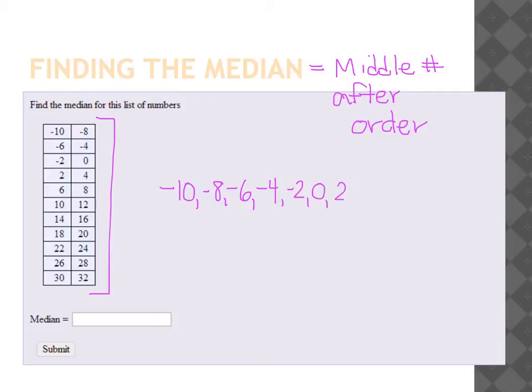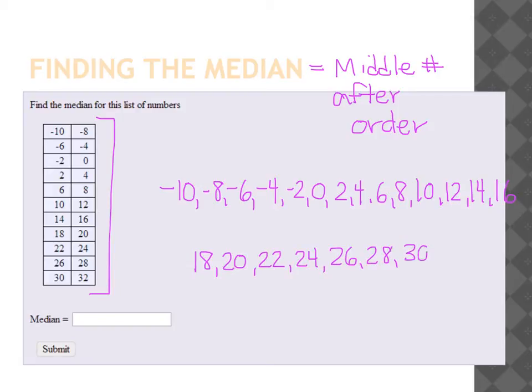6, 8, 10, 12, 14, 16, running out of space here, 18, 20, 22, 24, 26, 28, 30, and 32.